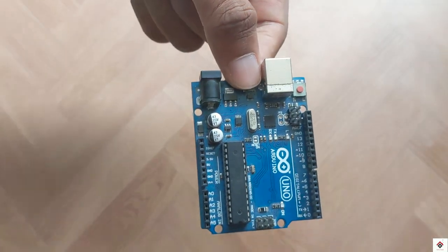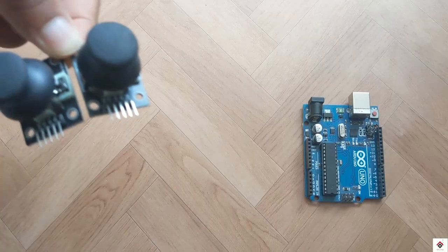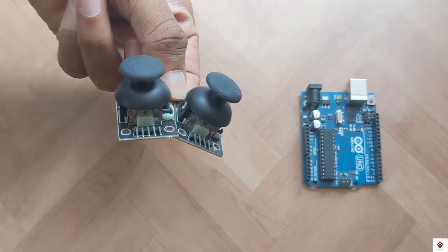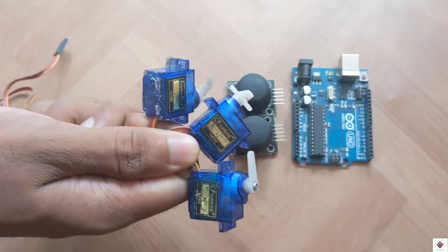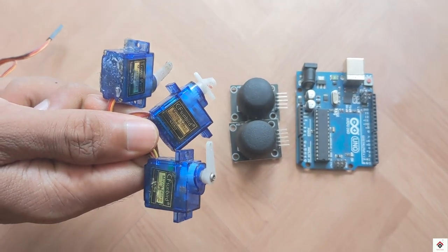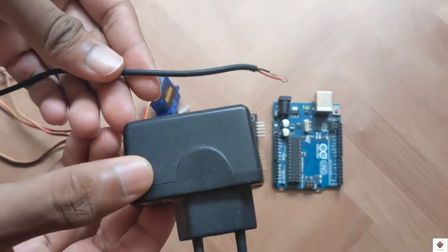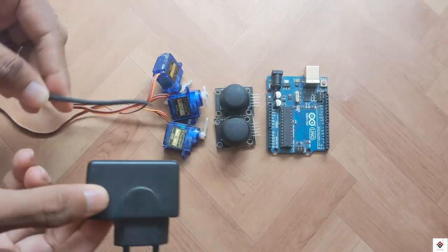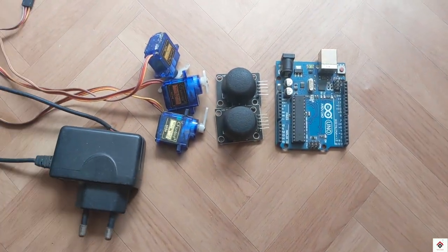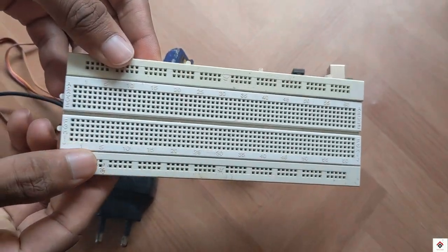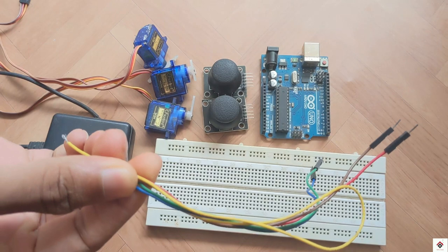The components required for this tutorial are: Arduino board, two joystick modules, three servo motors - I am using the SG90 micro servo motor, we need one external 5 volt supply, in my case I have chosen this mobile charger, breadboard, and jumper wires.